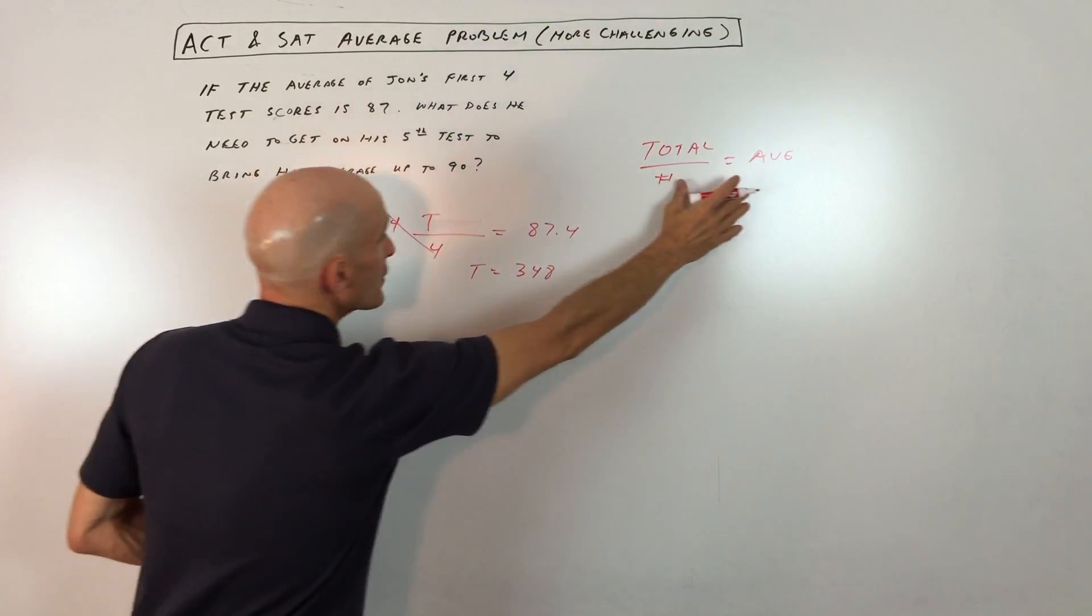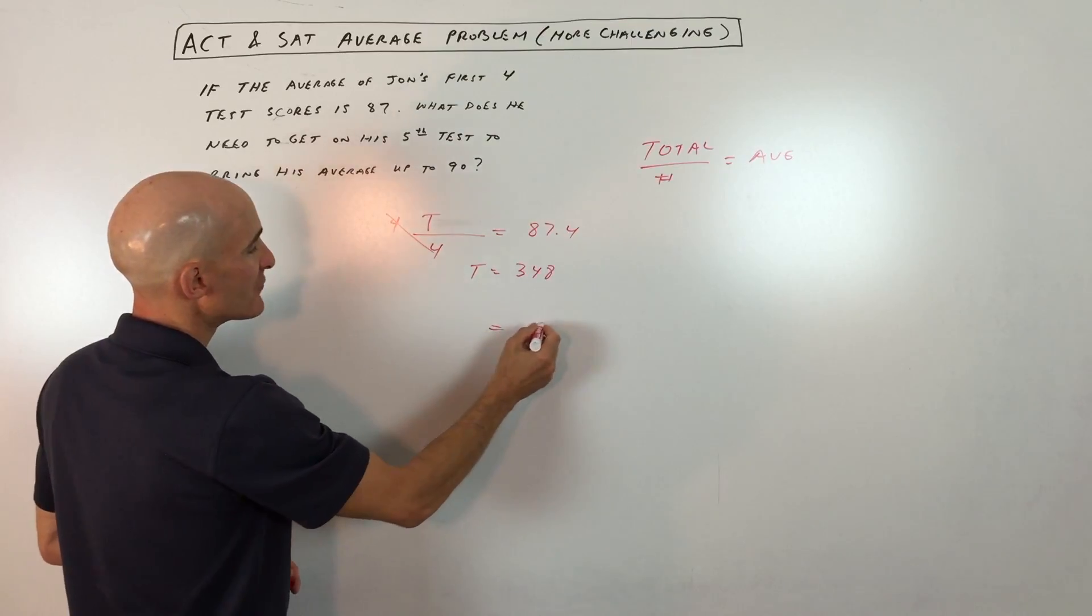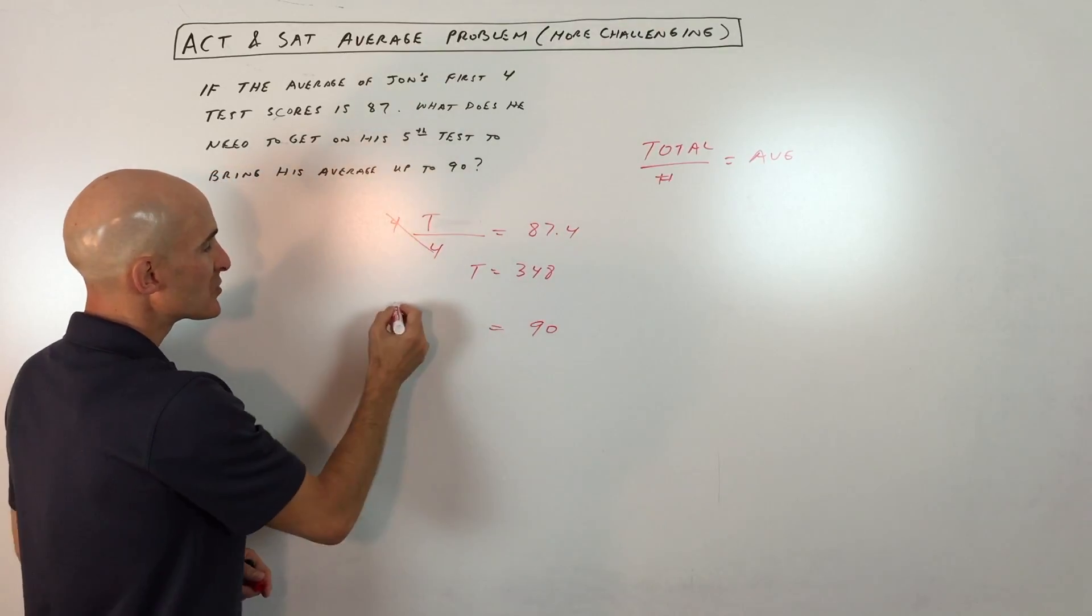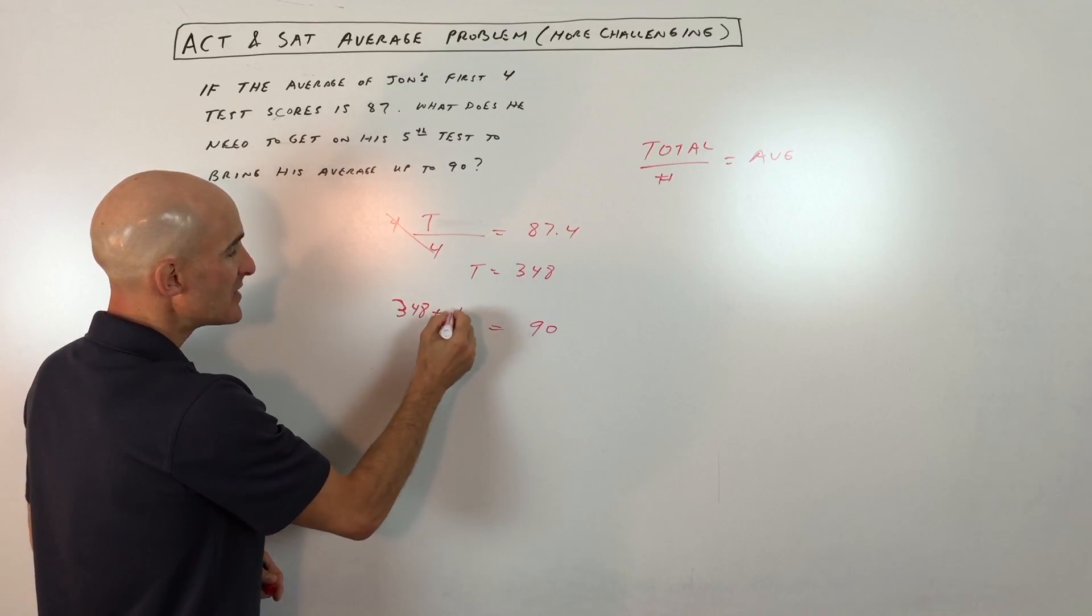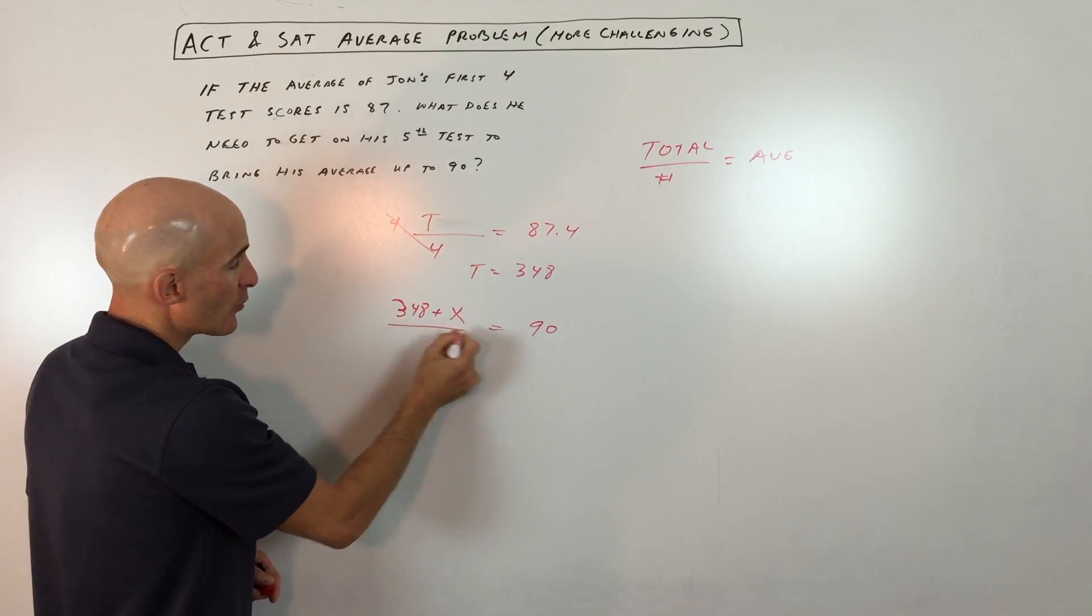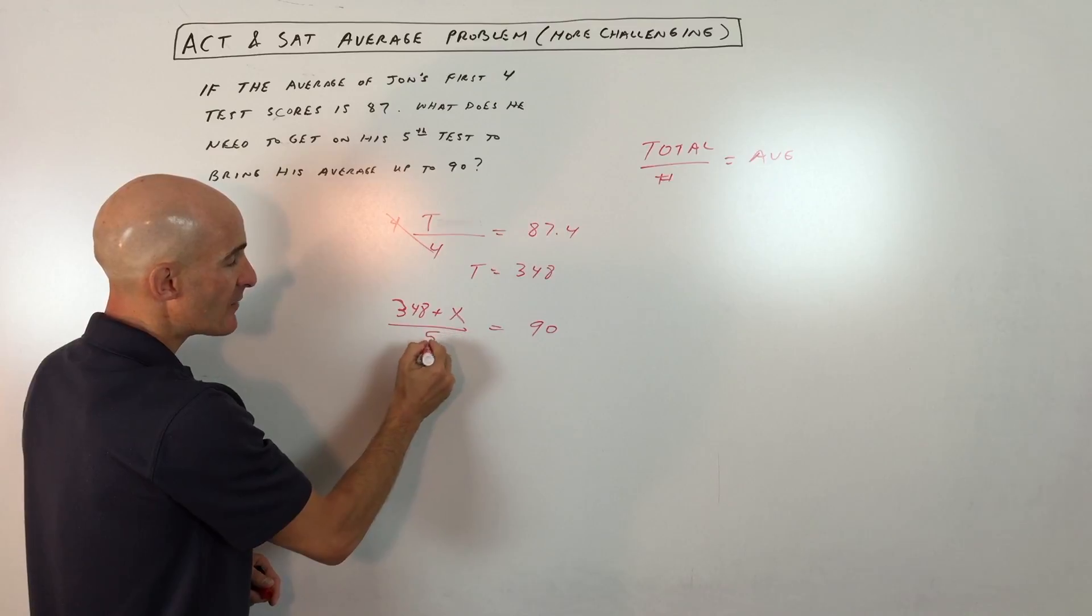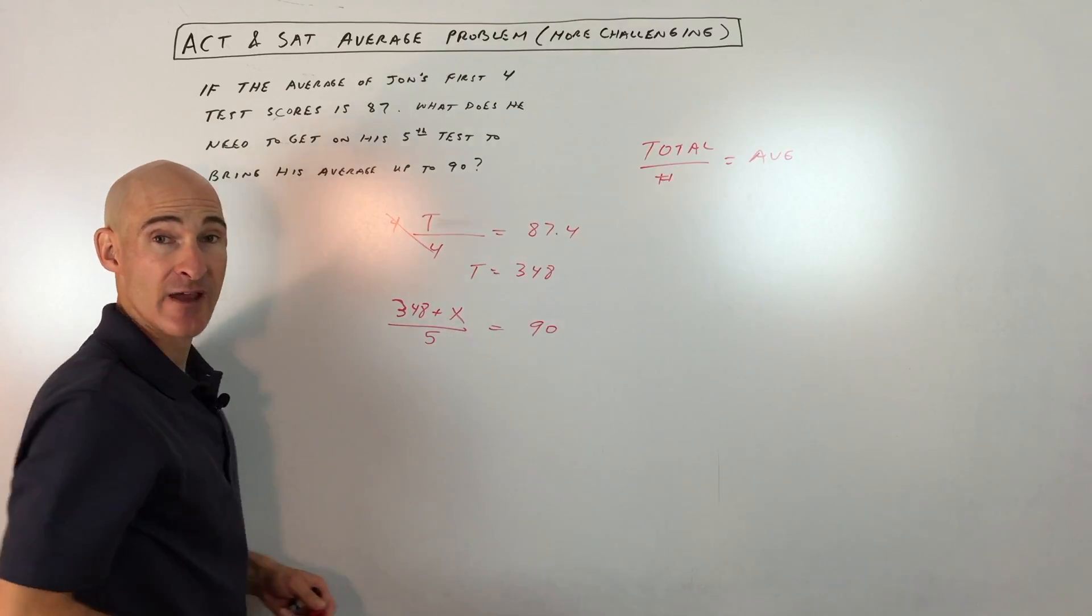Then we're going to use the average formula again. He wants to end up with an average of 90, and we know he scored 348 points so far, plus what he needs to score on his fifth test. We'll take that total divided by the five tests, which should give him an average of 90.